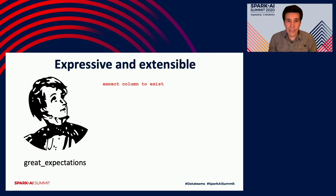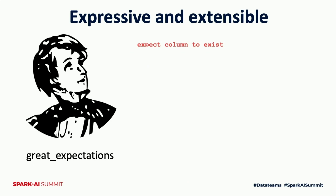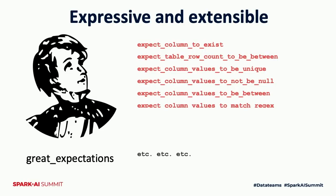Great Expectations comes with a library of a few dozen built-in expectation types — for example, `expect_column_to_exist`. Behind every expectation type in the library, there is probably some kind of data horror story of something going very wrong that could have been prevented if this expectation had been verified.